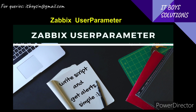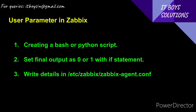What you need to do is get a zero or one at the end of the script. So the steps are: create a Bash or Python script, set the final output as zero or one with an if statement, and write the details in /etc/zabbix/zabbix_agent.conf. This is the main process of setting up a user parameter.